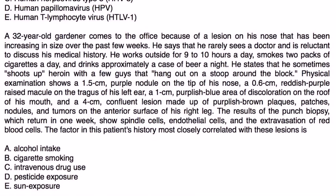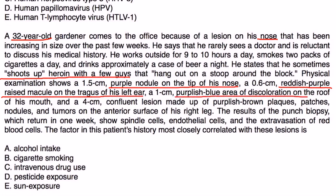Clinical vignette two: a 32-year-old gardener presents with a lesion on his nose increasing in size over the past few weeks. He rarely sees a doctor, works outside 10 hours a day, smokes two packs of cigarettes daily, drinks heavily, and states that he sometimes shoots up heroin. Physical exam shows a 1.5 cm purple nodule on the tip of his nose, a 0.6 cm red-purple raised macule on the tragus of his left ear, a 1 cm purplish-blue area on the roof of his mouth, and a 4 cm confluent lesion of purplish-brown plaques, patches, nodules, and tumors on the interior surface of his right leg. Punch biopsy results show spindle cells, endothelial cells, and extravasation of red blood cells.